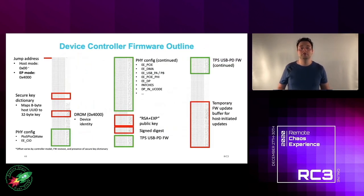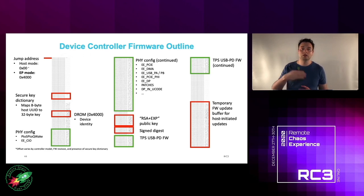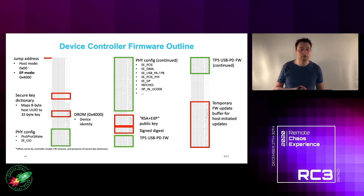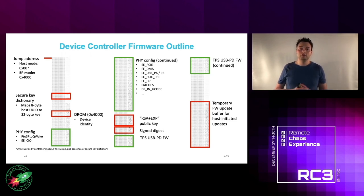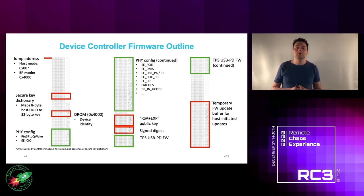Diving deeper into the device controller firmware: there's a jump address at the top, and more interestingly a secure key dictionary. When the user is using SL2, this section stores the secret keys that map to the host controller UUID — in plain text. There's also the DROM section, PHY configuration, the public key and signed digest, and what turns out to be the USB Power Delivery firmware — meaning the Thunderbolt host controller and USB PD controller share the same SPI flash. Finally, there's a scratch pad section that temporarily stores firmware updates initiated from the host.